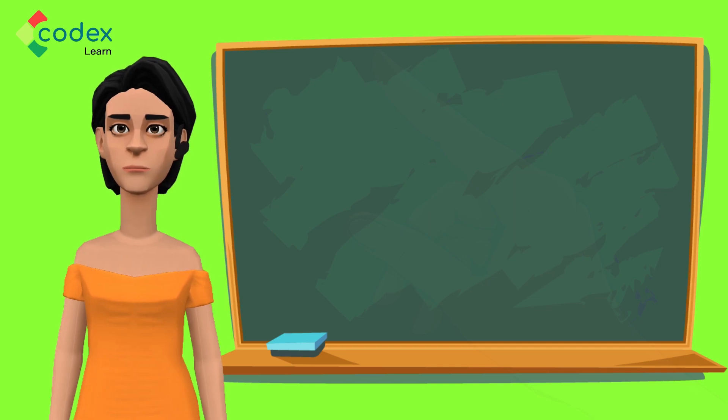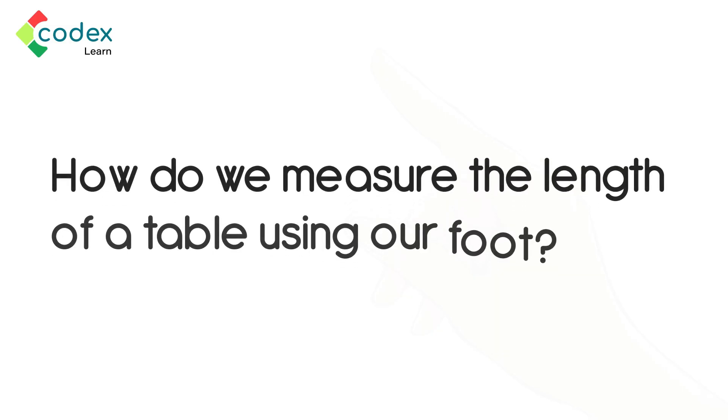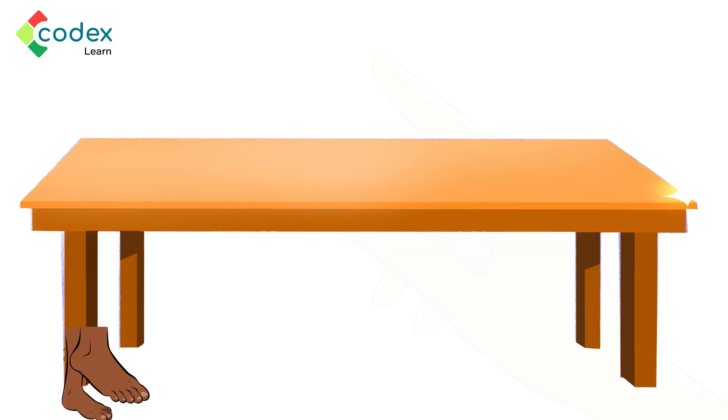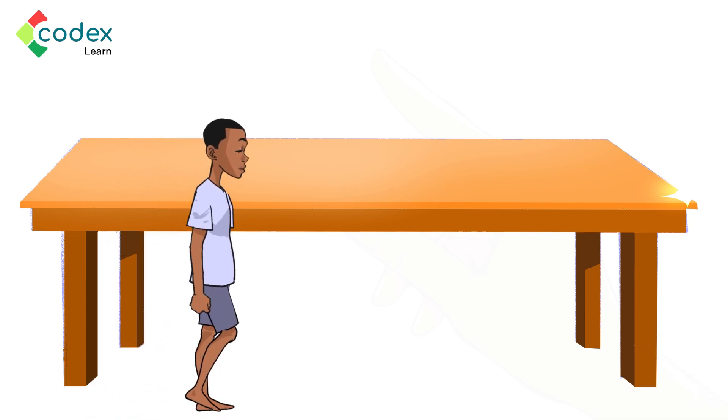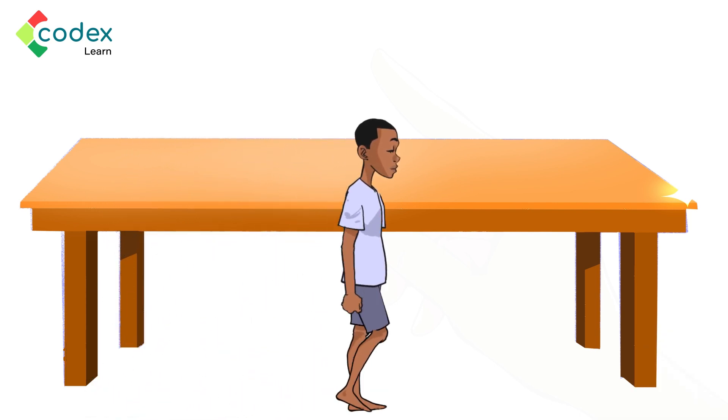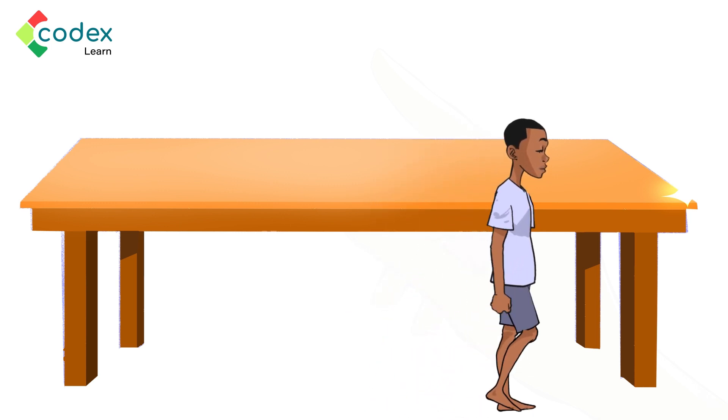Let us try another example. How do we measure the length of a table using our foot? Just like we did when measuring the length of the blackboard, start from one end of the table placing our foot in front of each other to the end of the table. Let us count how many steps it takes to go from one end of the table to the other with our foot in front of each other.